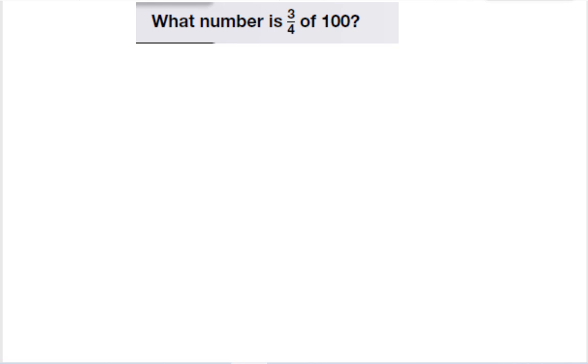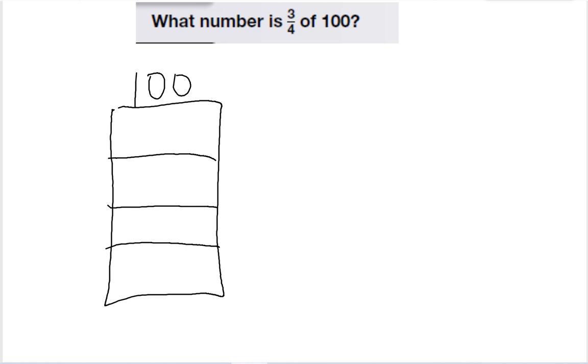So now we have what number is three-fourths of one hundred. Okay. So I'm going to draw my diagram. Divide it into fourths. One hundred at the top. One hundred divided by four is twenty-five.